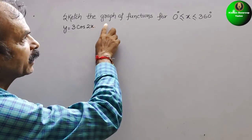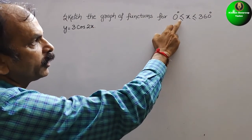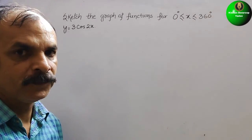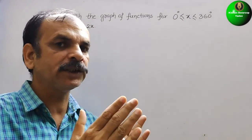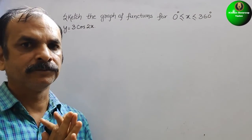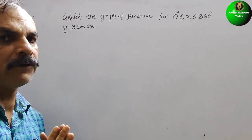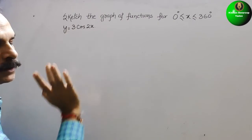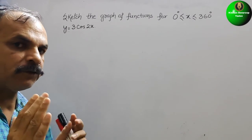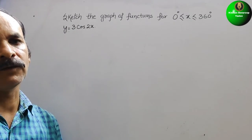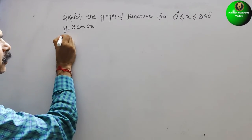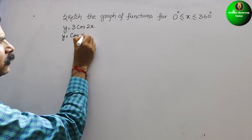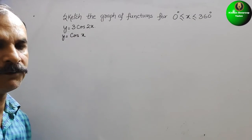The question is to sketch the graph of the function for 0° ≤ x ≤ 360°. That means from 0 to 360 degrees we have to make the graph. Here they have given y = 3cos(2x). So first we will make the original one — y = cos x, the basic cos graph.